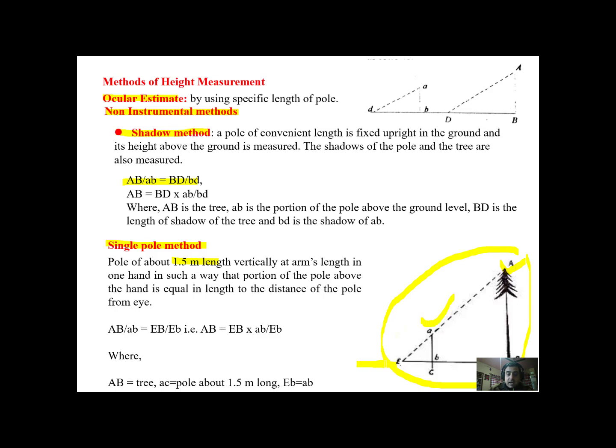You can see this is the tree and this is the pole in our hand and this is our eye level. We are holding it in our hand and you can see some triangles are formed and using the rule of proportionality. We again have two triangles, that is bigger triangle ABE and smaller triangle aEb. Using the rule of proportionality we have AB capital upon small ab is equal to EB upon eb. So AB can be estimated as EB into small ab upon capital E small b. We know the rest of the things except the height of the tree which can be estimated using this formula.